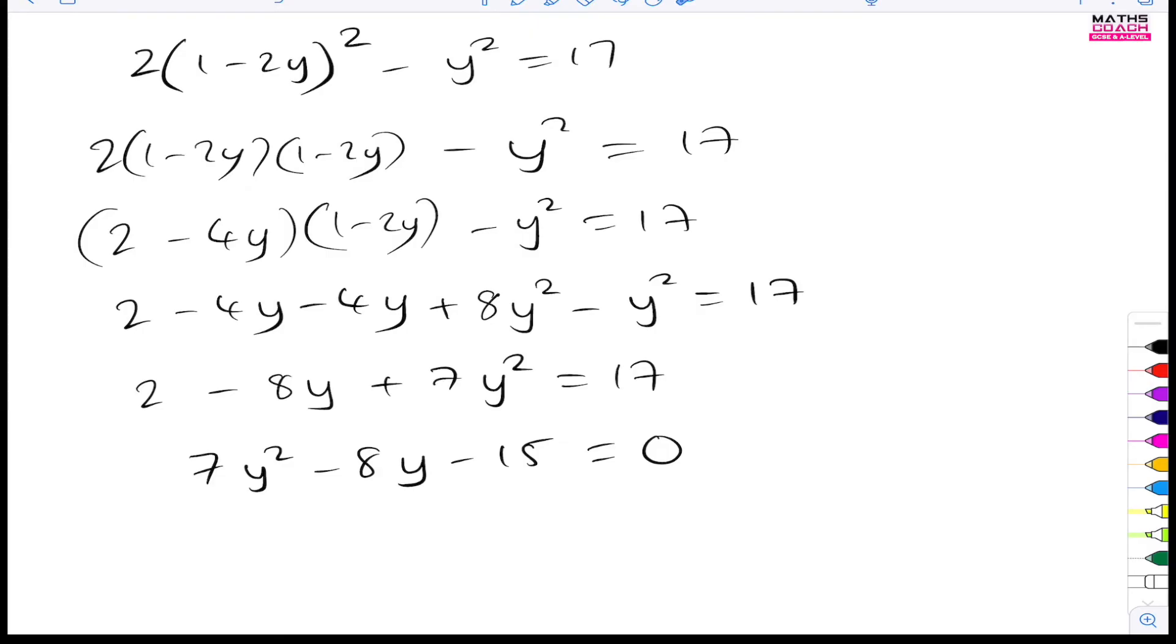But I do need to factorize this. Now, to factorize this, you can use a number of methods. Whatever method you're comfortable with, you can use the AC method, which I'll quickly show you. And I do have two videos on how to factorize quadratics. So you can look that up. But very quickly, you do 7 times the minus 15. And that gives us, so that gives us minus 105. So I'm looking for the factors of minus 105 that multiply to give minus 105 and add to give me minus 8.